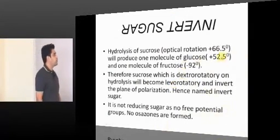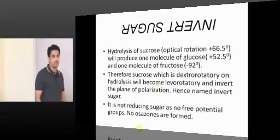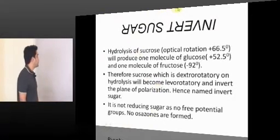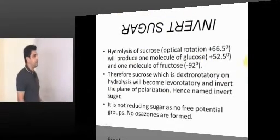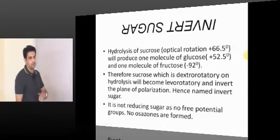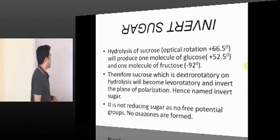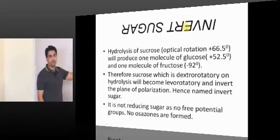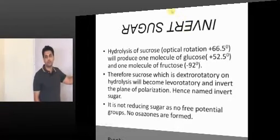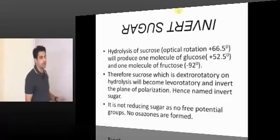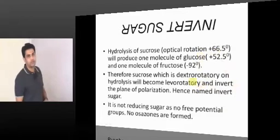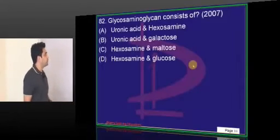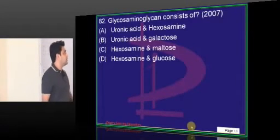One more important thing about sucrose: sucrose is called invert sugar. Why? Because sucrose is usually dextrorotatory — it turns plane polarized light towards the right. But if you hydrolyze sucrose, fructose being levorotatory causes the solution to mostly become levorotatory. So a dextrorotatory solution becomes levorotatory. That is why sucrose is called invert sugar.